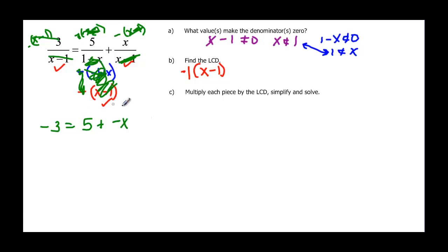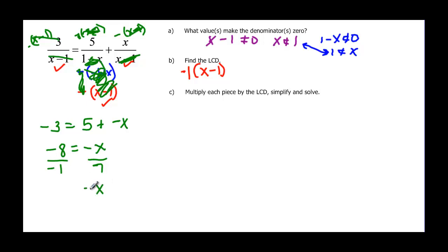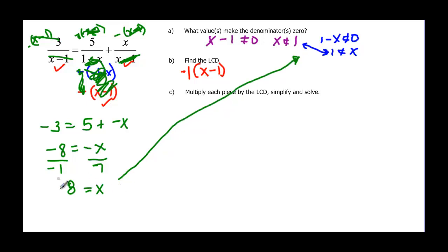Continuing to solve — this is just a linear equation. Subtracting five from both sides gives negative eight equals negative x. But we want positive x, so we divide by negative one, and x equals positive eight. Checking the domain value: it's not one, so x equals eight is our answer.